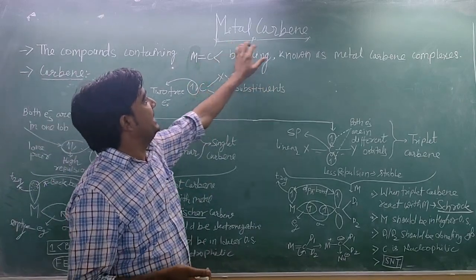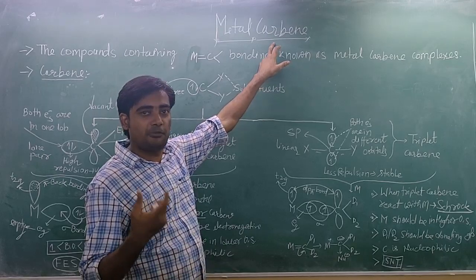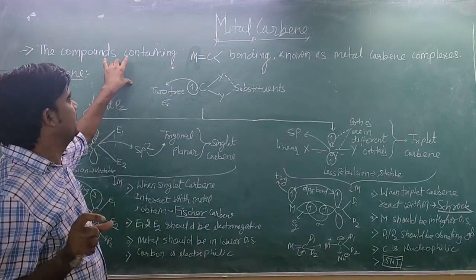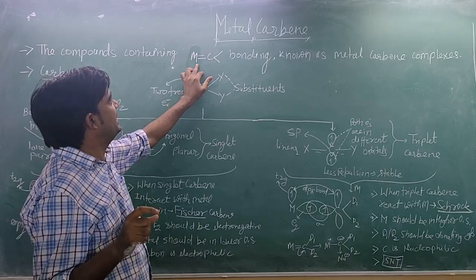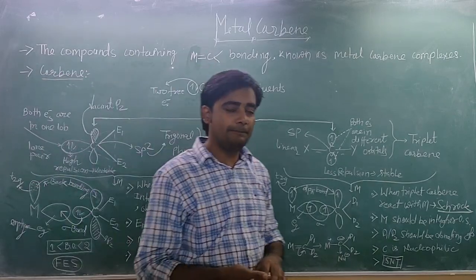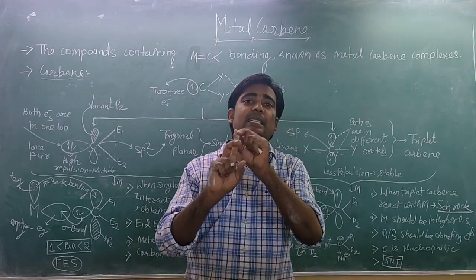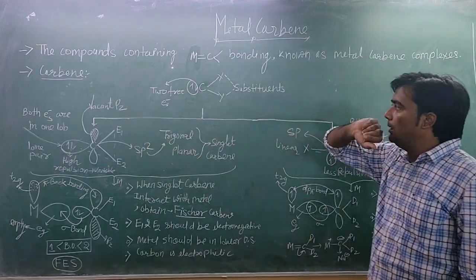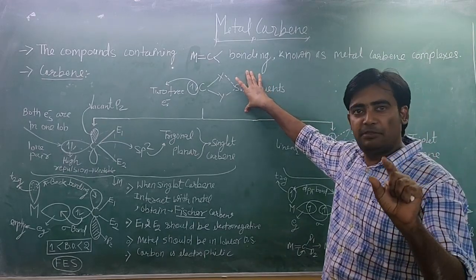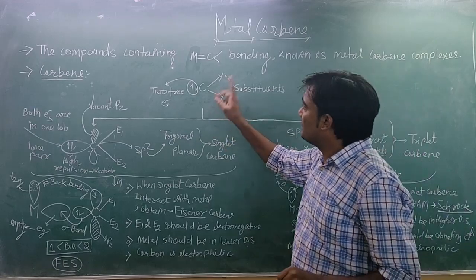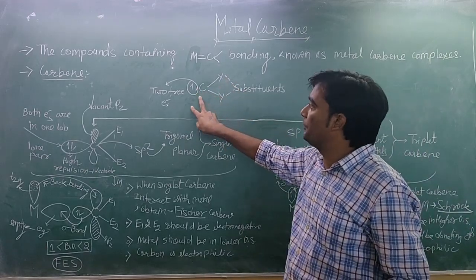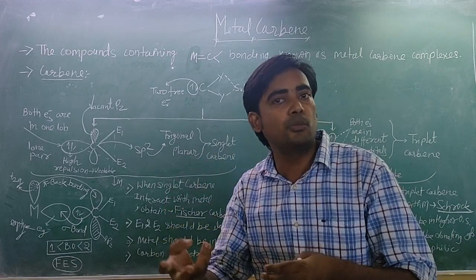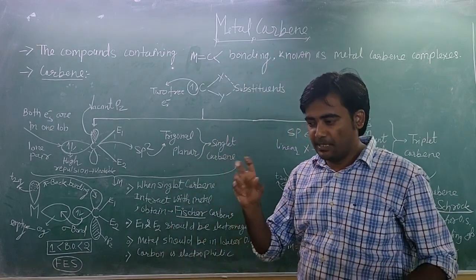As the name indicates — metal and carbon — these are complexes formed by the reaction of metal and carbon. A general definition is that the compound which contains a metal double bond to C is known as a metal-carbene complex. There are two terms: first is metal and second is carbene. So first of all we are going to study carbene. Carbene is an organic intermediate which is very reactive, having two substituents and two electrons.